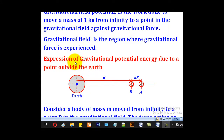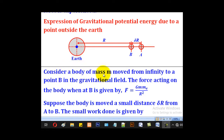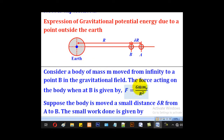We shall begin by getting an expression for gravitational potential energy due to a point outside the earth. Consider a body of mass m moved from infinity to a point b in the gravitational field. The force acting on the body when at b is gravitational force. The mass of this body is m and the mass of the earth is me, so gravitational force will be Gm·me over r squared, where r is the separation of the two bodies.